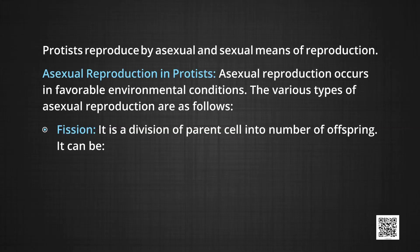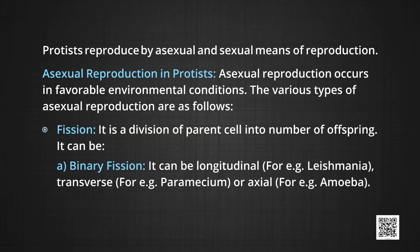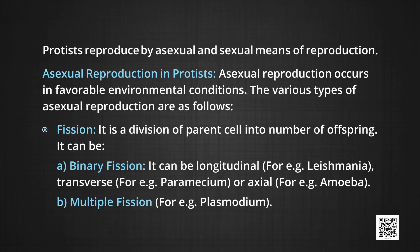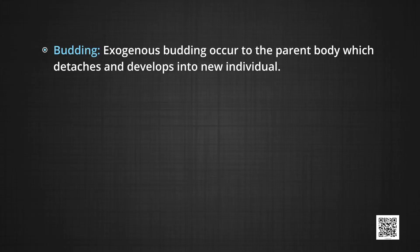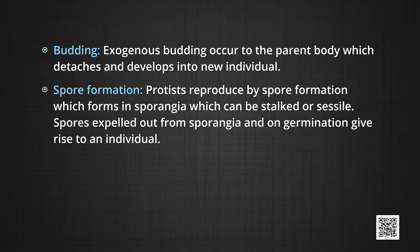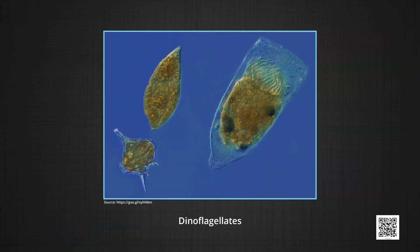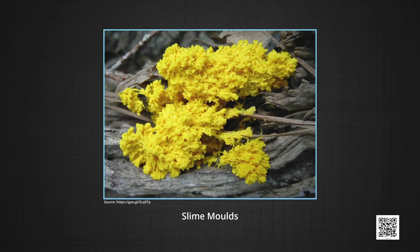Types of asexual reproduction in Protists: fission — division of a parent cell into offspring — which can be binary fission (longitudinal as in Leishmania, transverse as in Paramecium, or axial as in Amoeba), or multiple fission as in Plasmodium; budding — exogenous budding where part of the parent body detaches and develops into a new individual; and spore formation — Protists reproduce by spore formation in sporangia, and spores expelled from sporangia germinate to give rise to new individuals. Protists include chrysophytes (phytoplankton producers), dinoflagellates, euglenoids, slime molds (consumers and decomposers), and protozoans.